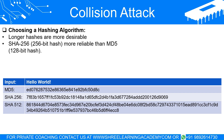In conclusion, while collisions pose challenges to data security and integrity, understanding their nature and knowing how to handle them effectively can significantly mitigate their potential risks. By using robust encryption and hash functions, implementing effective collision detection mechanisms, and being aware of the threat of collision attacks, you can ensure the safe handling and transmission of sensitive data.